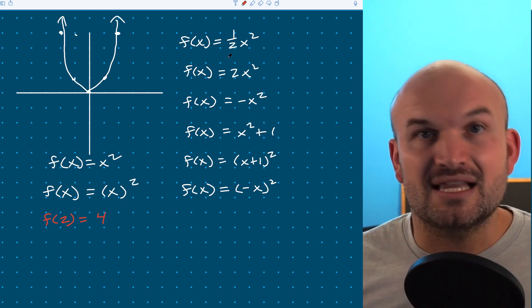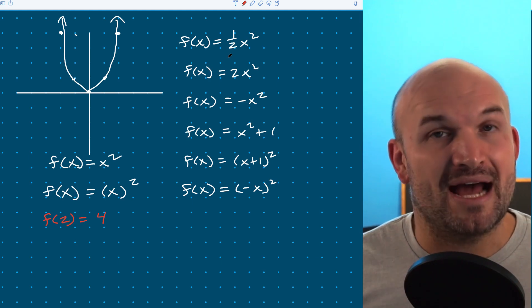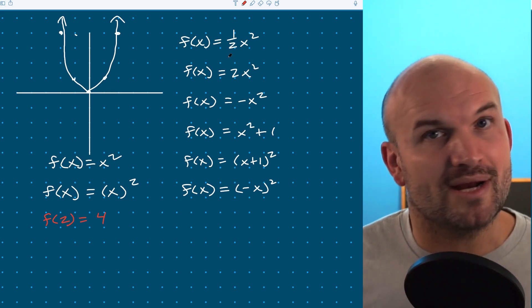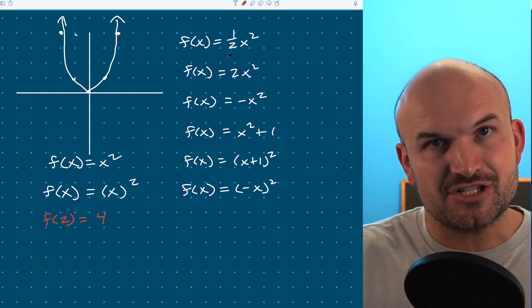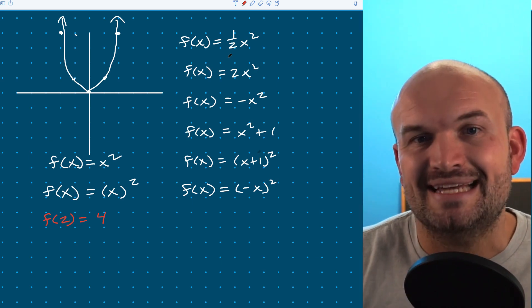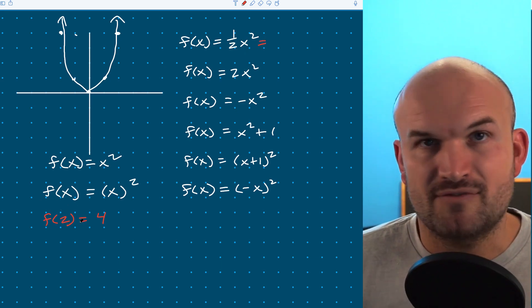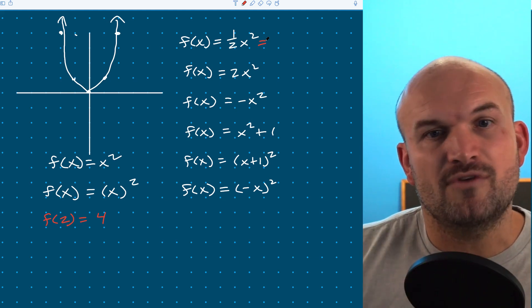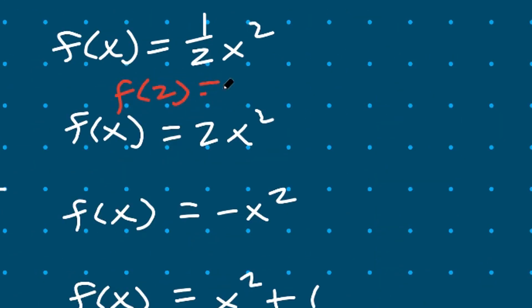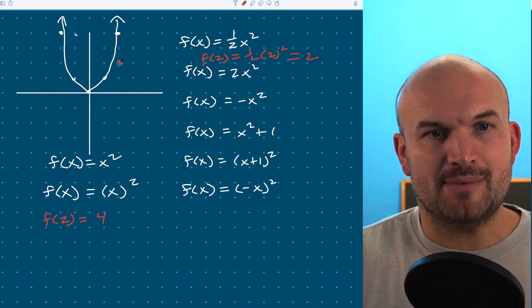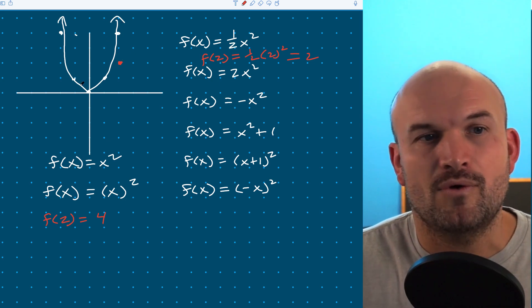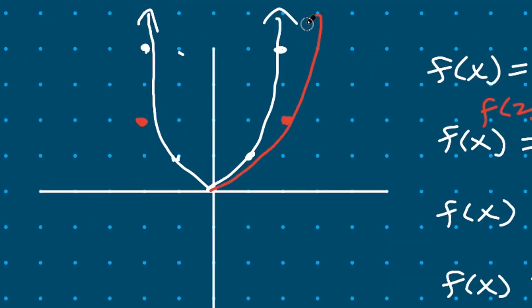Whenever we're multiplying on the outside by a value that is less than one but greater than zero, that is going to be a vertical compression — it's taking this graph and compressing it down. We can verify this by finding the value at two. We know the parent graph has a value of four, but if we compress it, it should be lower than four. So f(2) = one-half times two squared. Using order of operations: two squared is four, four times one-half equals two. You can see at two points over, I'm only going to go up to two instead of four — this graph is vertically compressed.